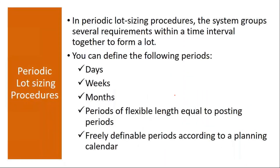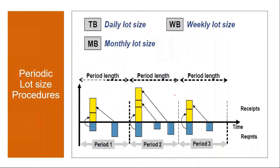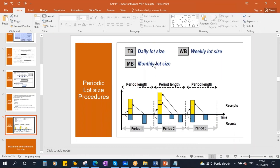I will tell you in which scenario this is used. Your production department says: normally we produce a product once a month, not as and when required. They say you give requirements in small quantities but it is not possible to produce small quantities as and when required — we normally produce that product only once a month. In that case you go for periodic lot sizing procedures.